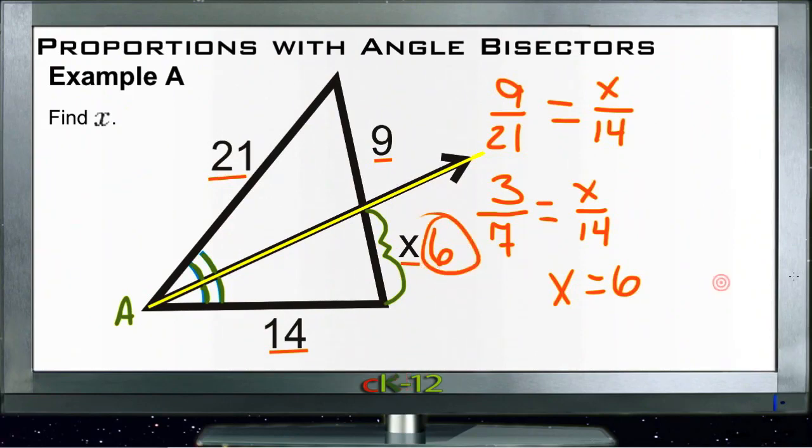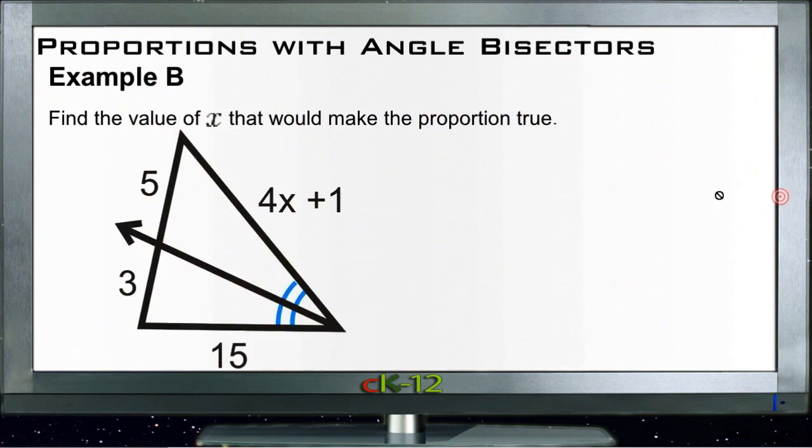All right, let's move on. Example B says find the value of x that would make the proportion true. Very similar to the last one, only this time it's the long side that's missing and we have a little bit of calculation to do since we have an actual expression here instead of just a single variable, but it's a very similar problem.